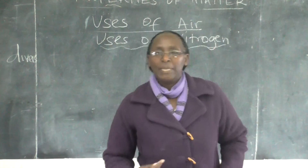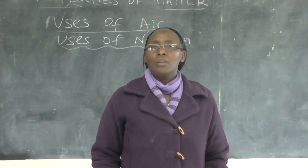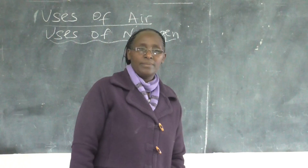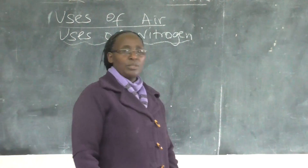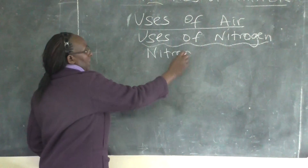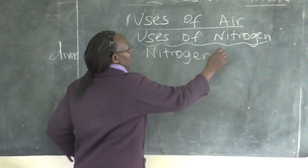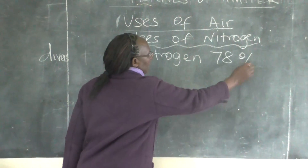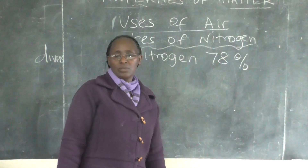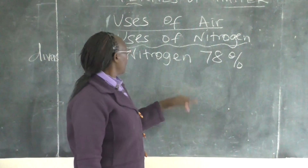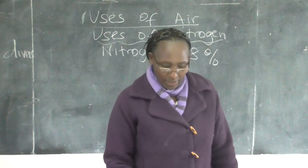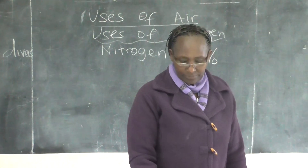Which is the percentage of nitrogen, as we learned? Nitrogen is 78%. Remember, we said 78% comes from the 100%. From the 100%, we have the nitrogen at 78%. So nitrogen is large — it is the most abundant — in the air.